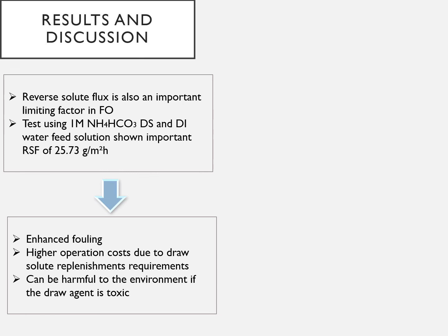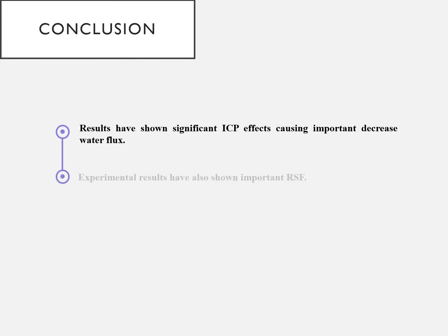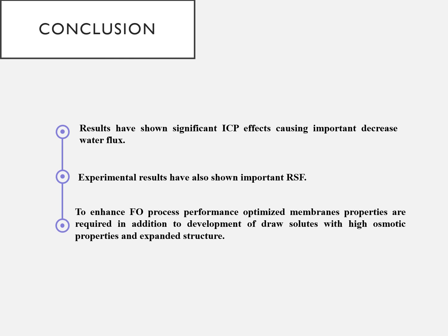Experiments have shown a high reverse solute flux of 25.73 grams per square meter per hour, which can induce enhanced fouling, higher operation costs, and can be harmful to the environment. To effectively address this issue, highly selective membranes and draw solutes with expanded structures are required. Results have shown significant ICP effects and important reverse solute flux. To enhance FO process performances, optimized membrane properties and draw solutes with high osmotic properties and expanded structures are required.